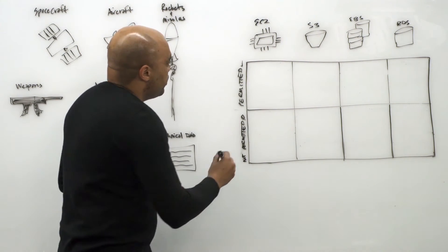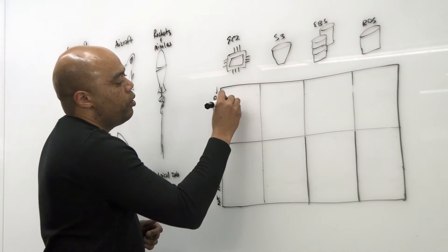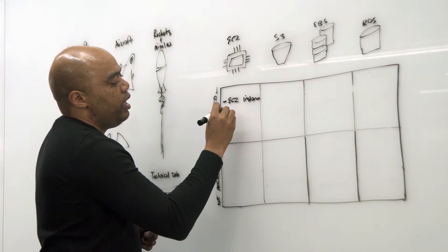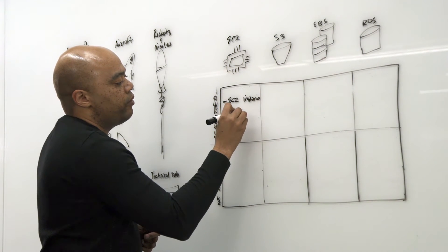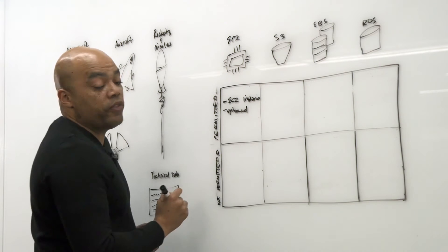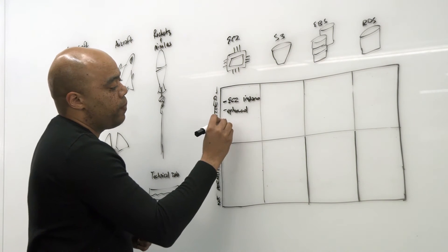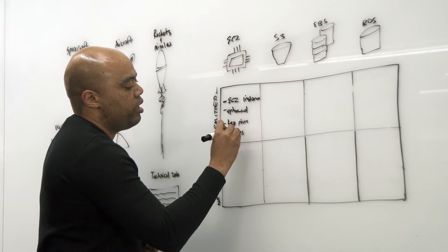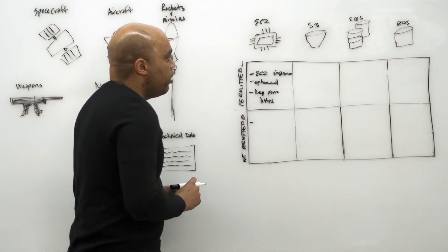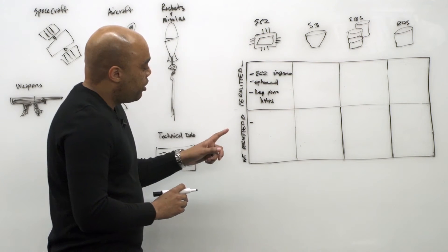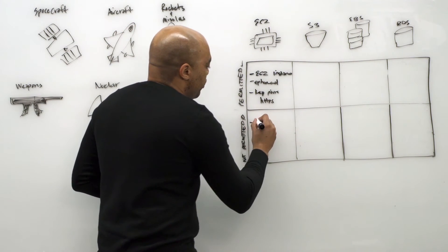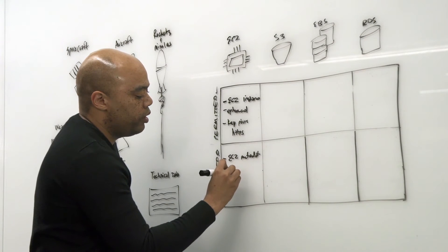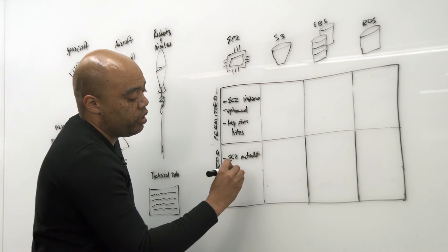But for EC2, ITAR data is permitted within the EC2 instance and any ephemeral drive associated with that EC2 instance, as well as key pairs when using HTTPS. Along those same lines, ITAR data is not permitted within EC2 metadata or key pairs when using HTTP.